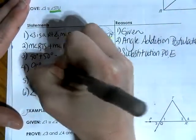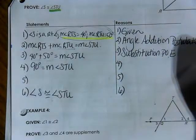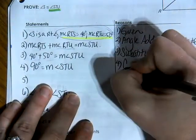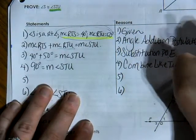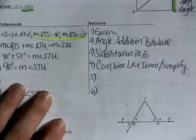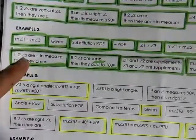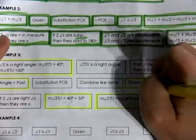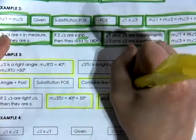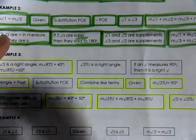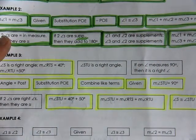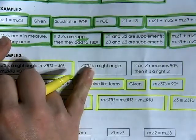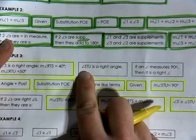I know that 40 plus 50 is 90 degrees, so I'm going to write 90 degrees equals the measure of angle STU. All I did here was simplify — combine like terms, 40 plus 50 equals 90. I've already used the substitution property of equality, so now I think I want to say that if this angle is 90 degrees, then it has to be a right angle. So angle STU is a right angle.